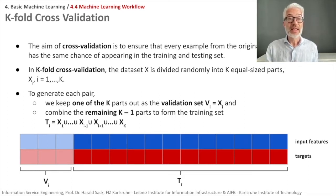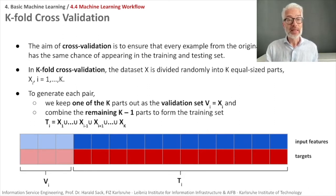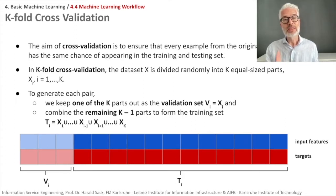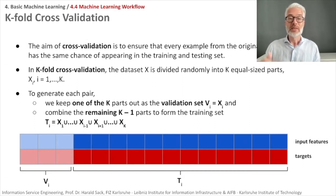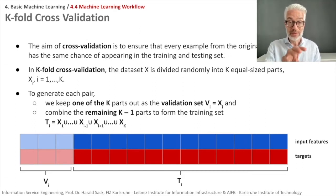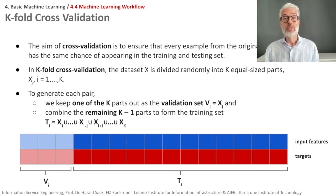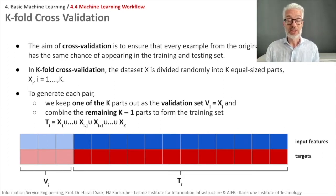To generate each pair, you keep one of the k parts out as the validation set and combine the remaining k−1 parts to form the training data set. You do this for each single one of the k parts, performing a complete training run based on exactly that split of training and validation data.